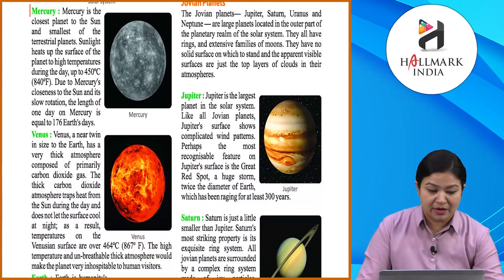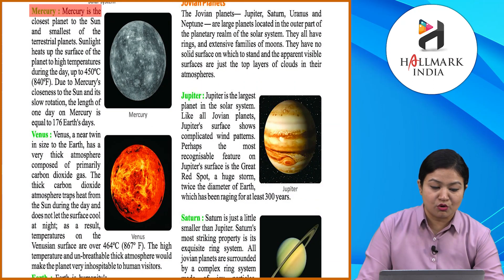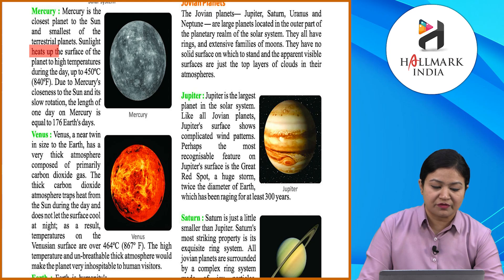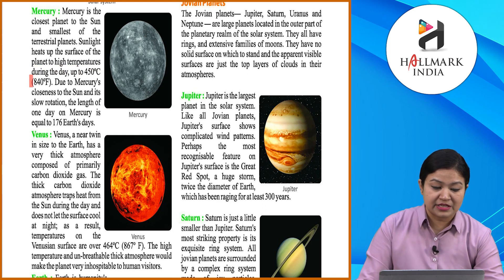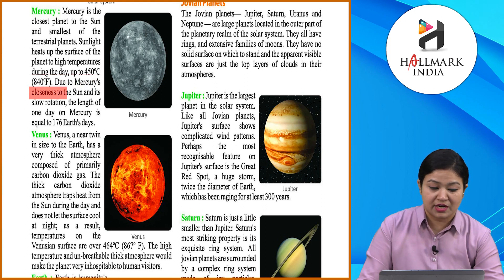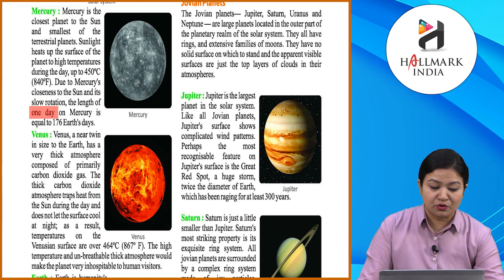Mercury is the closest planet to the Sun and the smallest of the terrestrial planets. Sunlight heats up the surface of the planet to very high temperatures during the day — up to 450 degrees Celsius or 840 degrees Fahrenheit. Due to Mercury's closeness to the Sun and its slow rotation, the length of one day on Mercury is equal to 176 Earth days.